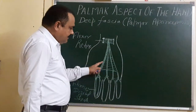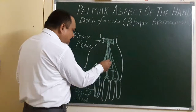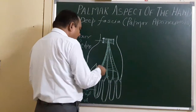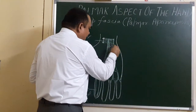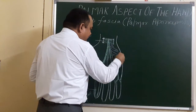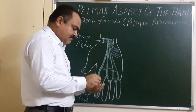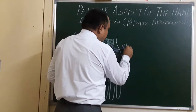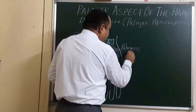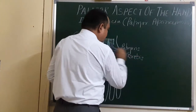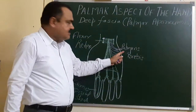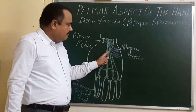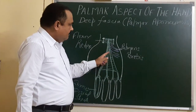It has a lateral border and a medial border. This medial border gives origin to a muscle — this is palmaris brevis. Palmaris brevis muscle takes its origin from the medial border of the palmar aponeurosis.